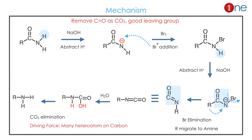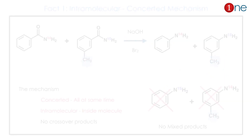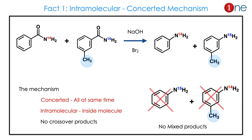Then water attacks the isocyanate — since carbon has many heteroatoms — and CO2 is removed, so the final product is amine. The mechanism is intramolecular and concerted. With labeled hydrogen in benzene and toluene, if the mechanism were intermolecular you would get a mixture of products, but since it is concerted you get a unique product.